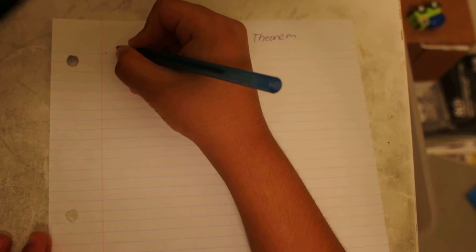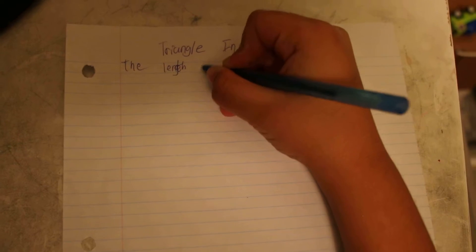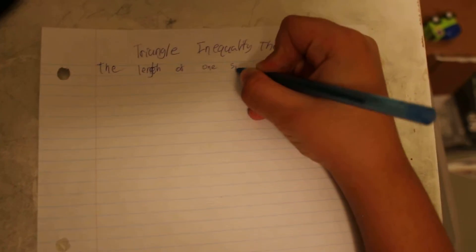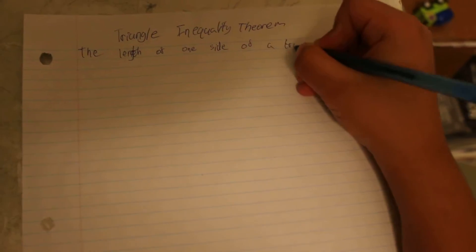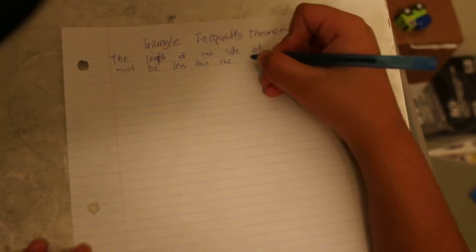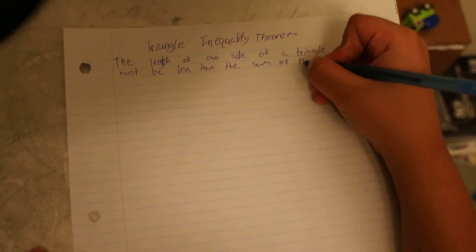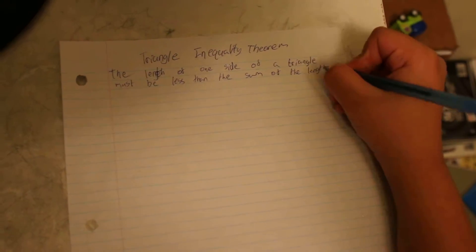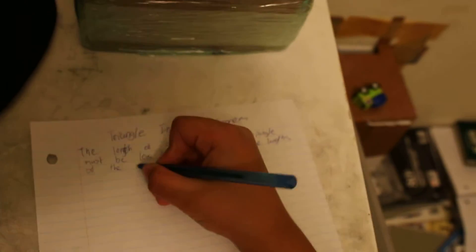Today I will be proving the Triangle Inequality Theorem. The Triangle Inequality Theorem states that if you don't want a triangle to be degenerate, meaning one angle is zero degrees, then the length of one side of a triangle must be less than the sum of the lengths of the other two sides.